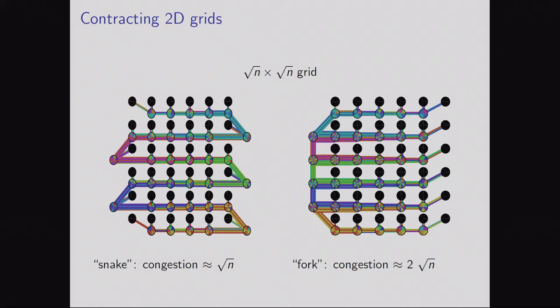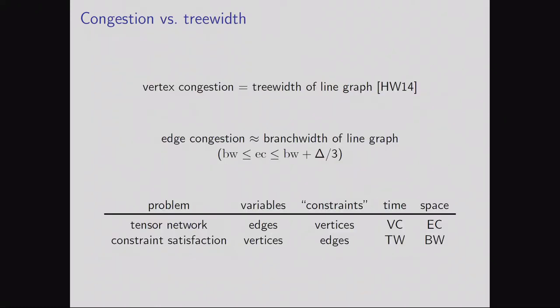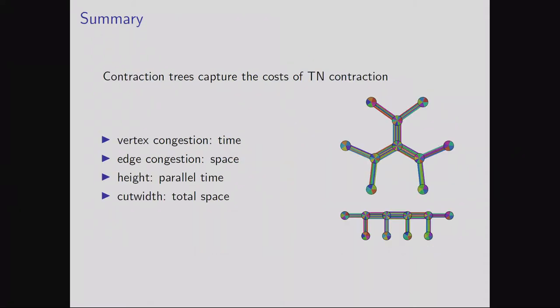Why is it that contraction trees and congestion is the right way of looking at things for tensor networks? Normally when we think of constraint satisfaction problems as a graph, we think of variables as corresponding to vertices and constraints as corresponding to edges or hyper edges. But in tensor networks the situation is reversed—our edges correspond to variables and our vertices correspond to the constraints of the tensors. This is why it's appropriate that the right way of characterizing things with tensor networks is in terms of vertex and edge congestions, which are the analog in the line graph of tree width and branch width, where tree width and branch width are traditionally used quantities for upper bounding the time and space costs of dynamic programming algorithms on trees.